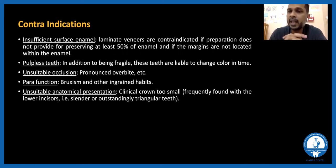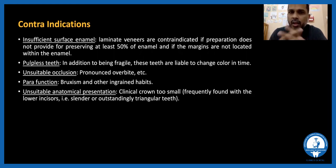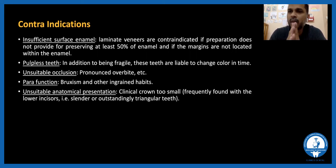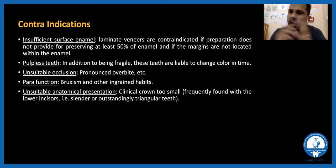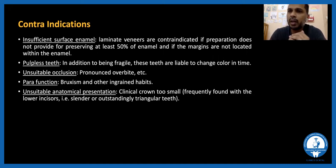Pulpless teeth — even though the textbook says they are not ideal for veneers — you can still consider endodontically treated teeth for veneers, provided you warn the patient that in the long run the tooth stump inside may discolor and the veneer might look discolored. Pronounced overbites, parafunction habits like bruxism, unsuitable clinical presentations where teeth are too small, and cases where a post and core or crown is indicated are also contraindications.